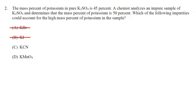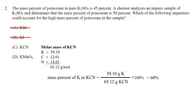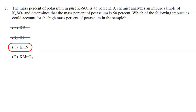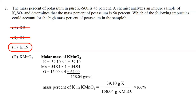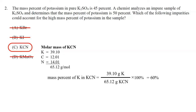Here's potassium cyanide — potassium, carbon, and nitrogen. Running the numbers: 39.1 divided by 65.12 gives 60% potassium by mass. Since 60% is greater than 45%, that would cause the percent potassium in the mixture to be too high. Just to confirm D is not correct: for potassium permanganate, KMnO4, the math gives only 25% potassium — too small. The correct answer is C, potassium cyanide.